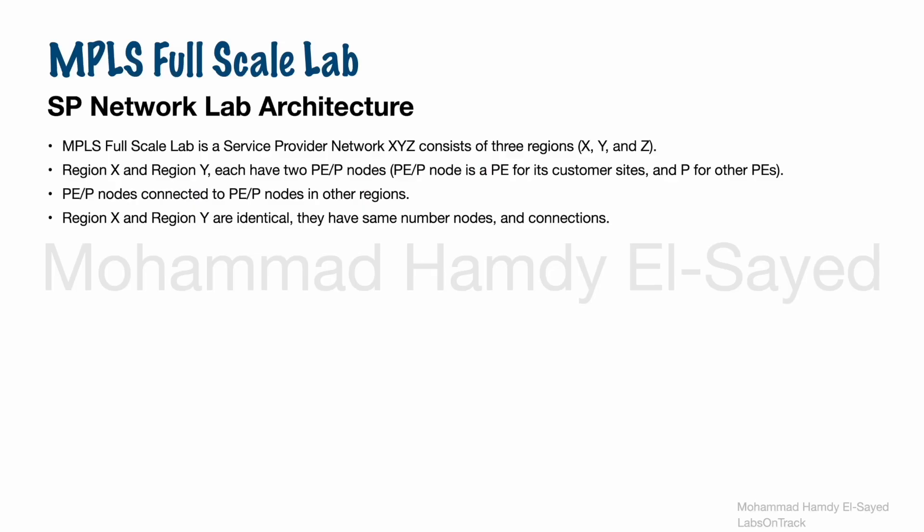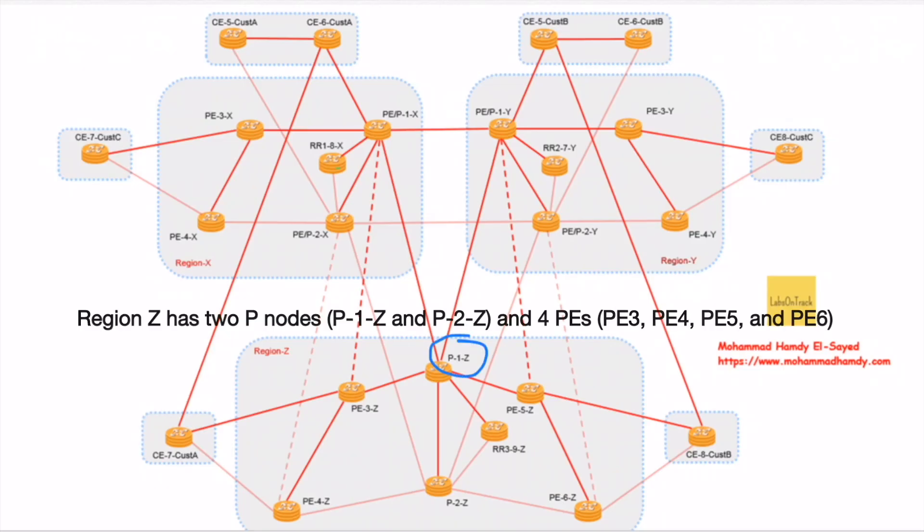As we said, region Y is identical to region X. It has the same number of routers and same connections. Region Z has P1Z and P2Z, two routers functioning as P router only, residing in region Z. It has four PE routers: PE3, PE4, PE5, and PE6.